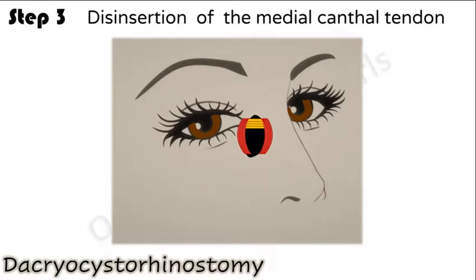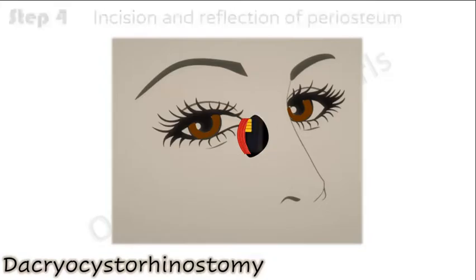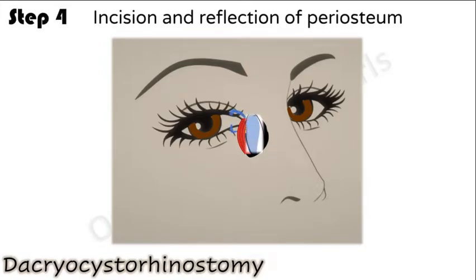Step 3: separation of the medial canthal tendon allows easy access to the lacrimal sac beneath. Step 4: an incision is made and the periosteum is lifted off the bone with a periosteal elevator, exposing the lacrimal fossa. In a dacryocystectomy, the sac is dissected out, cut at both ends, and removed at this stage.